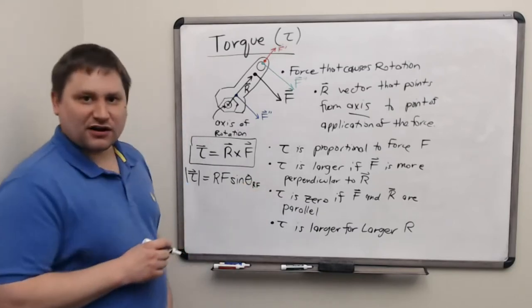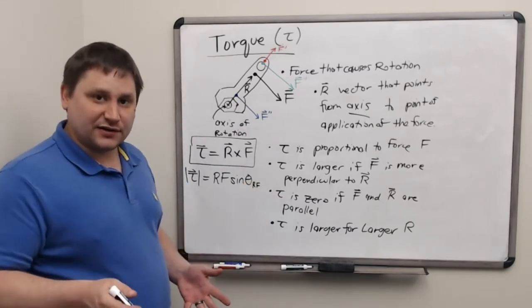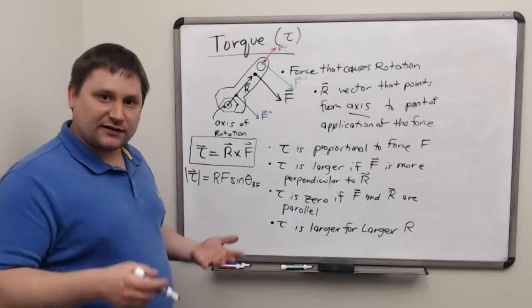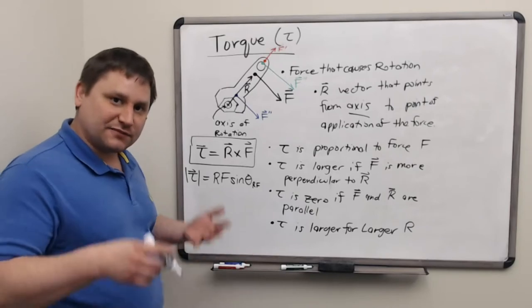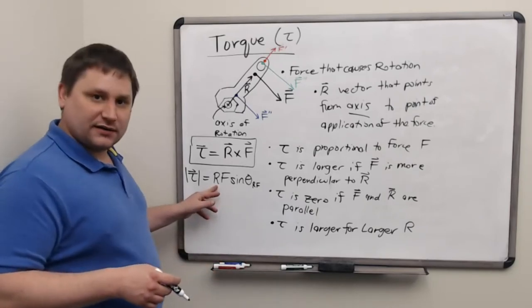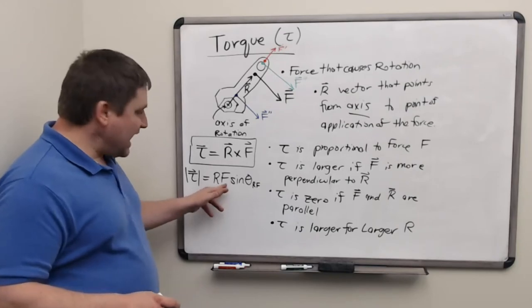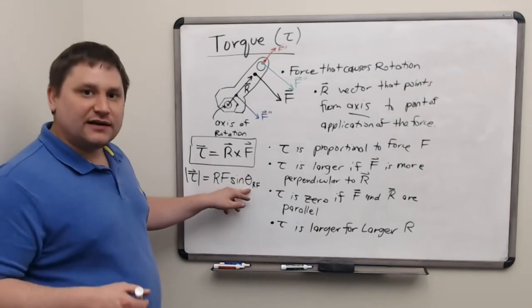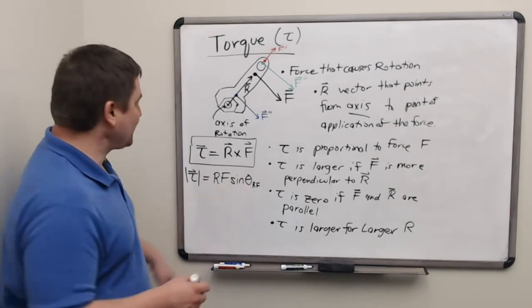For the cross product, we also have a formula for just the magnitude of the torque. This is often useful when we work in two-dimensional scenarios, which most of our problems are. The magnitude of R is R without the vector symbol. F is the magnitude of the force. And this angle here is the angle between the position vector and the force vector.